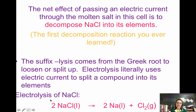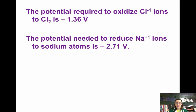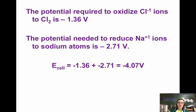The electrolysis of molten NaCl gives us liquid sodium and chlorine gas. The cell potential required to oxidize Cl⁻ to Cl₂ is −1.36 V. The potential needed to reduce Na⁺ ions is −2.71 V — found directly in Appendix E because we're reducing. If we want to oxidize Cl⁻ to Cl₂, we flip the sign and get −1.36 V. So the overall cell potential of this electrolytic cell is −4.07 V.